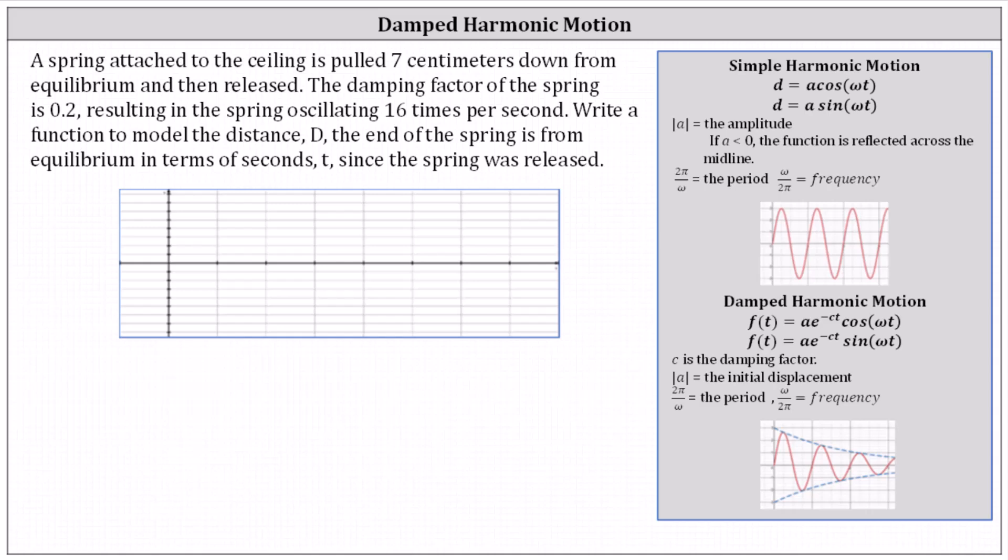A spring attached to the ceiling is pulled seven centimeters down from the equilibrium and then released. The damping factor of the spring is 0.2, resulting in the spring oscillating 16 times per second.